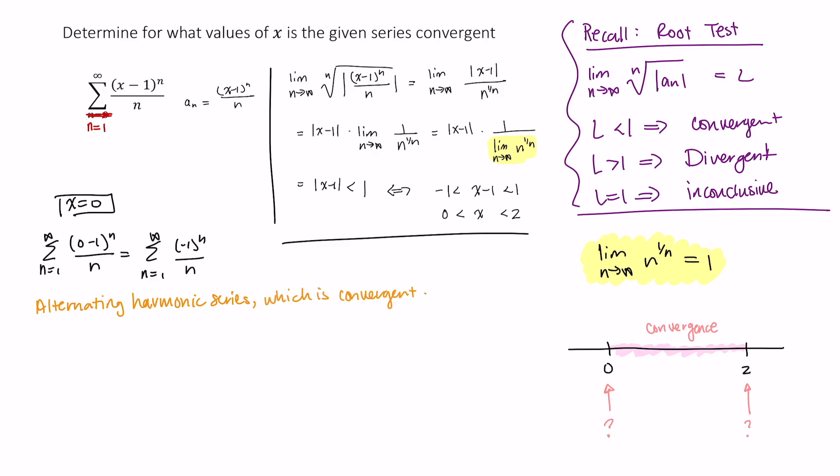Those of you in my calculus course have already seen this. The alternating harmonic series converges. Okay, so that tells me that I have convergence here at 0. So I'm going to drop a little underline there in my inequality.